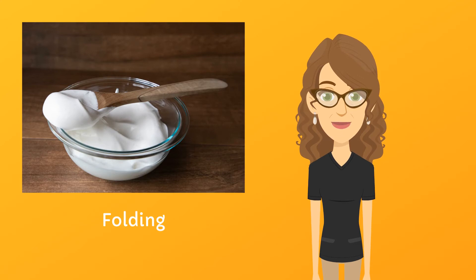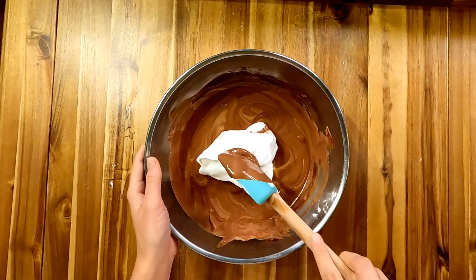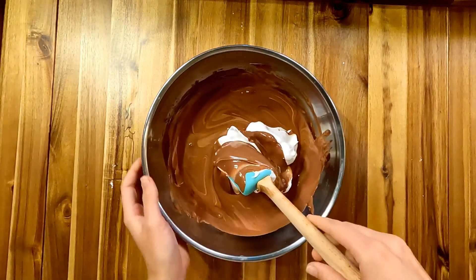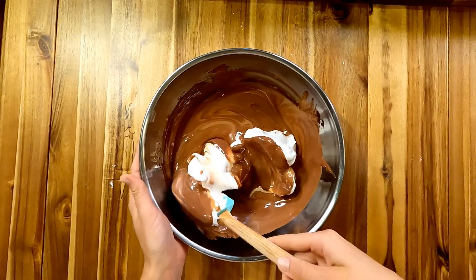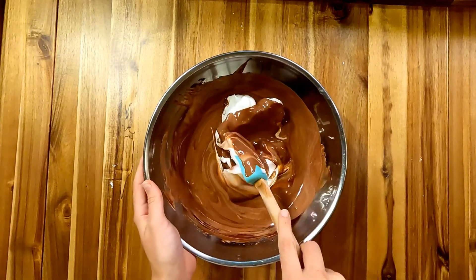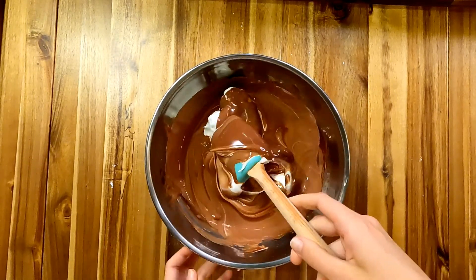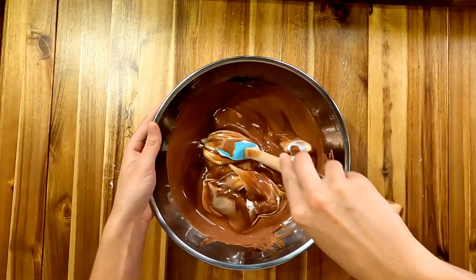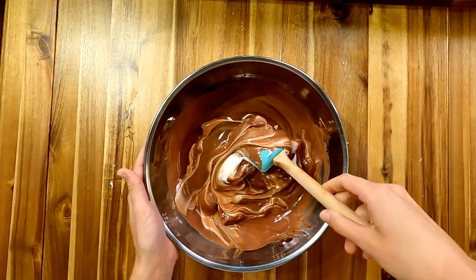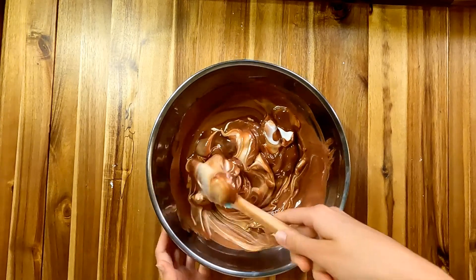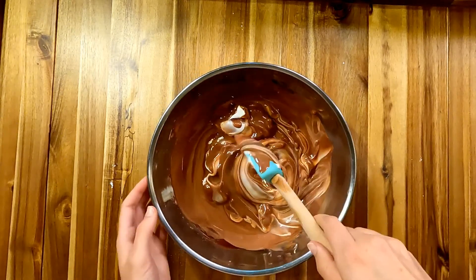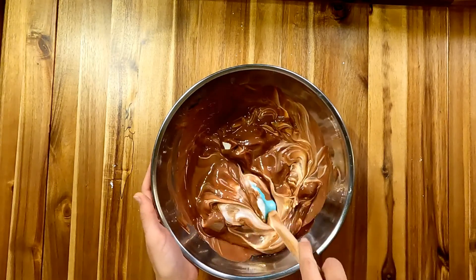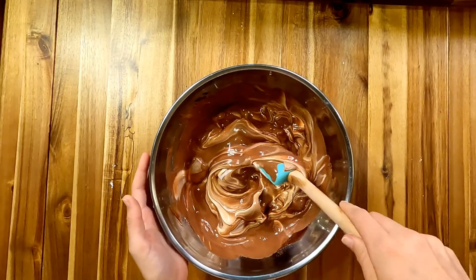Folding is a gentler form of mixing that minimizes damage. Here's how it works: using a rubber spatula or a large spoon, cut down through the center of the ingredients to the bottom of the bowl. Scrape along the bottom toward the side of the bowl, then pull the spatula upward and twist your wrist to plop the mass back toward the center. Rotate the bowl with each stroke, gradually working your way around the bowl several times until the ingredients are incorporated.